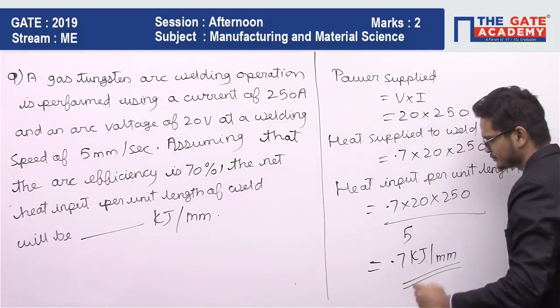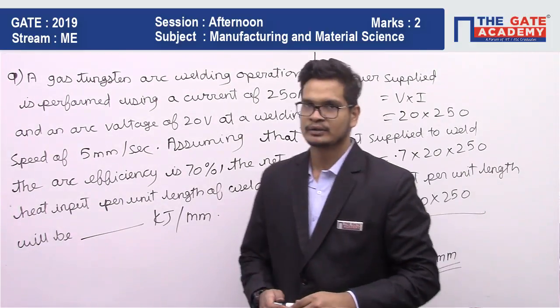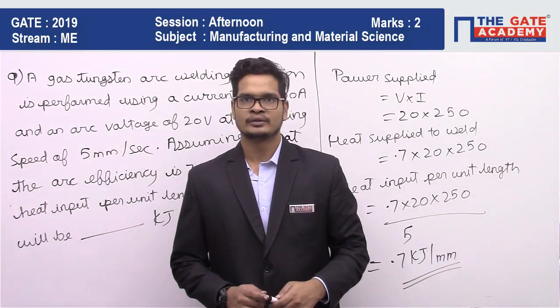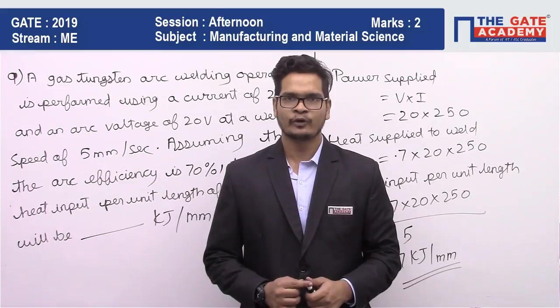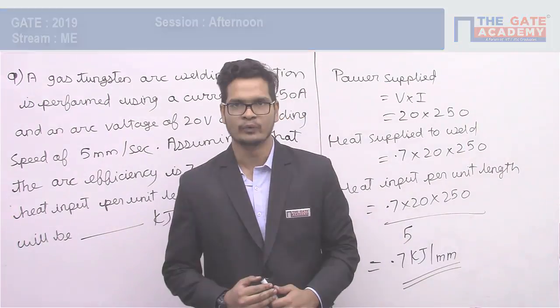So the final answer comes out to 0.7 kilojoules per mm. Hope you liked the video, please share this with your friends. Thank you.